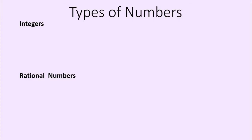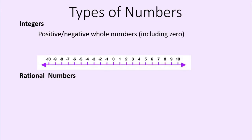First of all, types of numbers, because the textbook seems to keep getting this wrong. Integers are not just positive and negative numbers. They are positive or negative whole numbers, including zero. Integers do not include fractions or decimals.